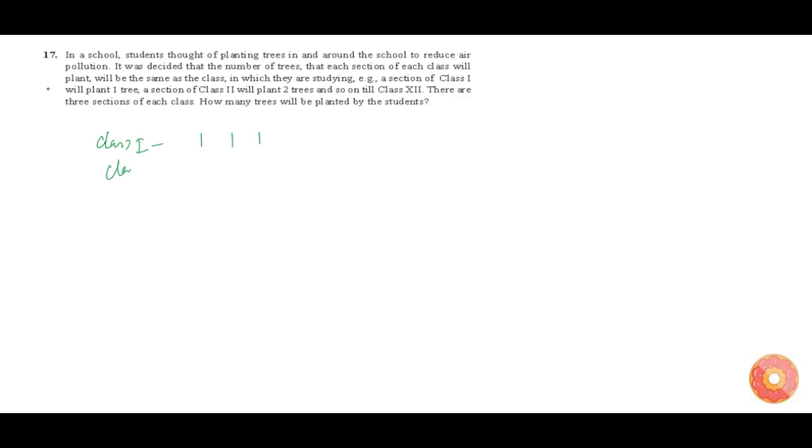Class 2 will plant 2 trees and they have 3 sections, so 2, 2, 2. Class 3 will plant 3 trees and there are 3 sections, which means 3, 3, 3, and so on till class 12, which is 12, 12, 12. Now you can write this as 3 into 1, this is 3 into 2, this is 3 into 3, and so on till 3 into 12.